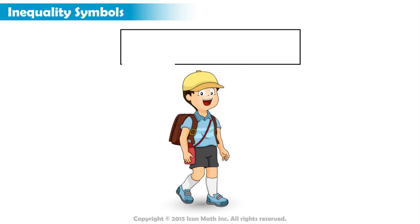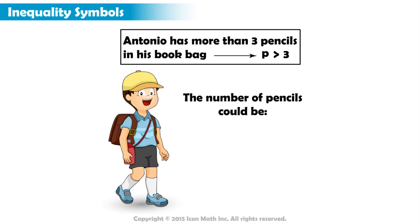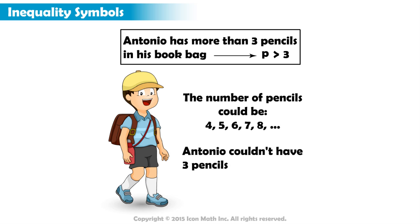For example, if Antonio knows he has more than three pencils in his book bag, he could represent this situation as p greater than 3, where p stands for the number of pencils. Antonio could have 4, 5, 6, 7, 8 pencils or more. He could not have 3 pencils because we know the number of pencils must be more than 3.